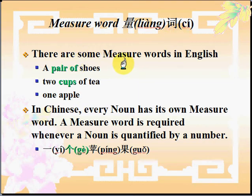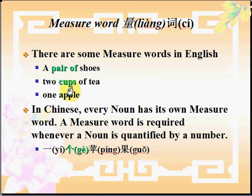There are some measure words in English, such as a pair of shoes, two cups of tea. Here, 'pair' or 'cups' would be the measure word. But we don't really use measure words so often in English — for example, one apple, two apples, one person, two people. In those situations, we don't use a measure word at all.